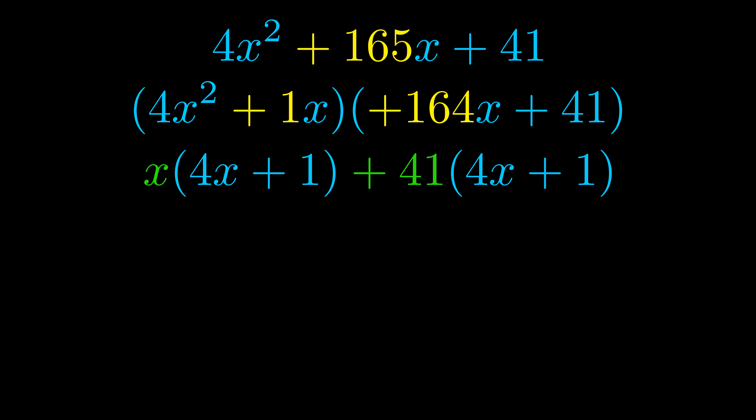Notice also how what remains inside of the parentheses is the same in both cases. The blue values are the same. Those blue values will become one of our factors and we will combine the two green values the GCFs that we pulled out to get the other one. And that is our fully factored equation.